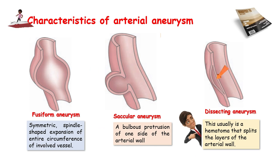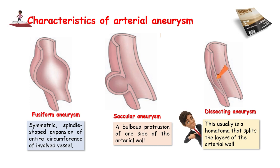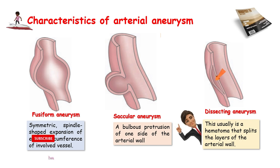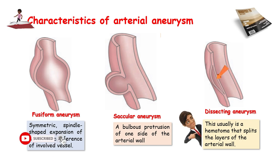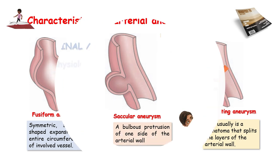A dissecting aneurysm is a splitting or dissection of an arterial wall by blood entering through an intimal tear or by interstitial hemorrhage. This is more common in the aorta. It usually forms a hematoma that splits the layers of the arterial wall. These are the different types of aneurysms that may occur within the aortic artery. This video will focus only on abdominal aortic aneurysms, or triple A.